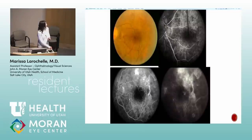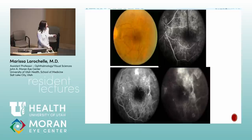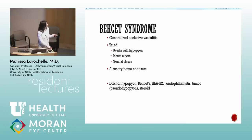Looking at retinal vessels that stop abruptly with dot hemorrhages and corresponding non-perfusion on FA — this is occlusive retinal vasculitis. Think of scary systemic diseases like lupus and Behçet's. Behçet's is a generalized occlusive vasculitis associated with hypopyon uveitis.